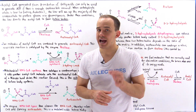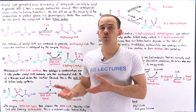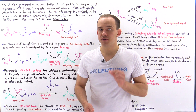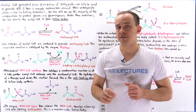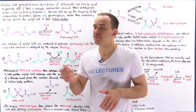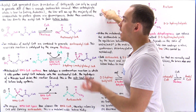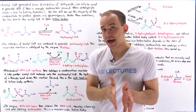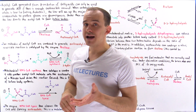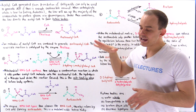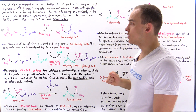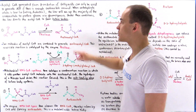Under such conditions, acetyl coenzyme A produced via the beta oxidation pathway will follow a different reaction pathway — the pathway we call ketogenesis, the formation of ketone bodies. Acetyl coenzyme A generated via beta oxidation of fatty acids can only be used to form ATP via the citric acid cycle if we have enough oxaloacetate. So if our carbohydrate intake is low — for example, when fasting or in diabetics — the liver will use up the majority of the oxaloacetate for gluconeogenesis, diverting acetyl coenzyme A to ketogenesis.